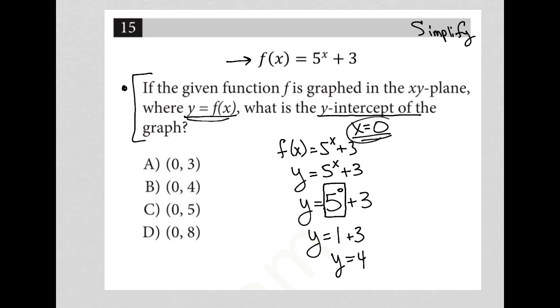So when x equals zero, y equals four. So zero comma four. And therefore, our correct answer is choice B.